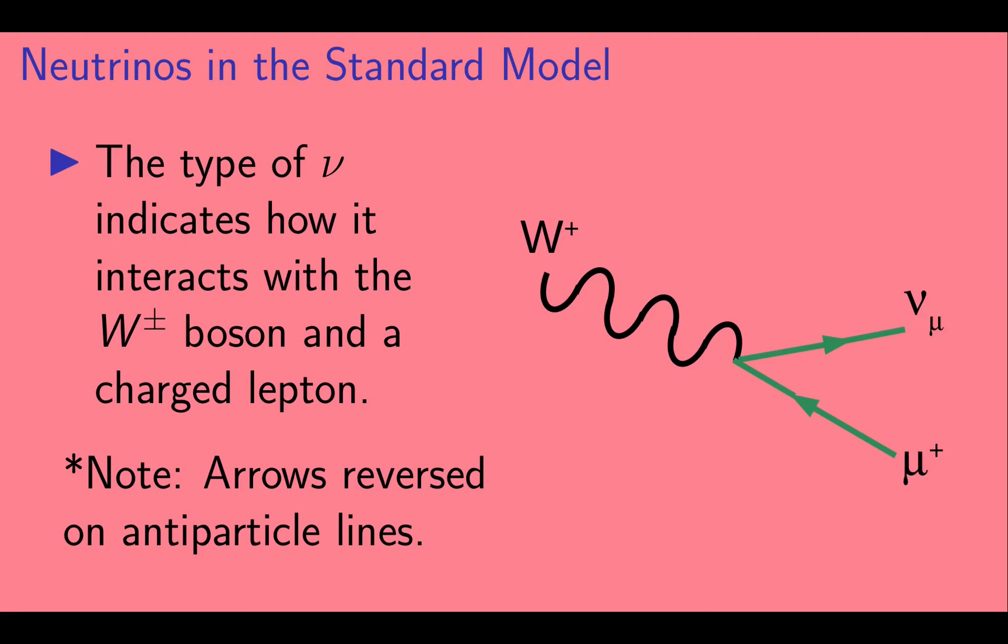Alternatively, the W plus can decay into a mu plus and a muon neutrino, or a tau plus and a tau neutrino.